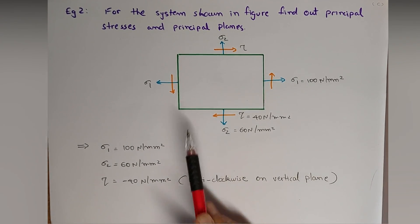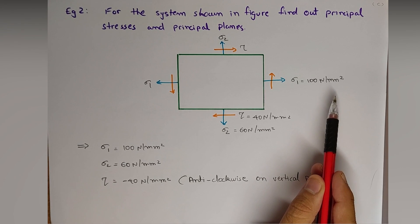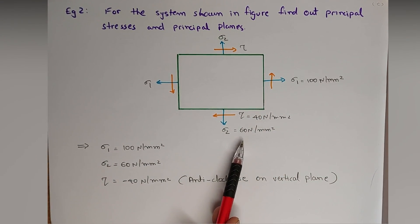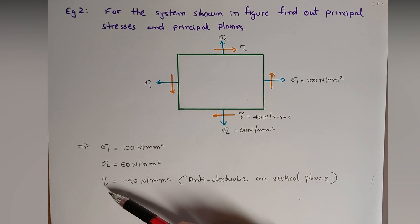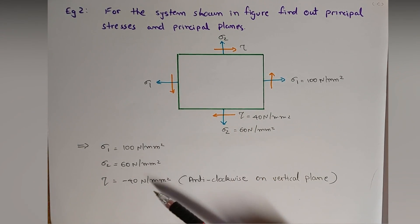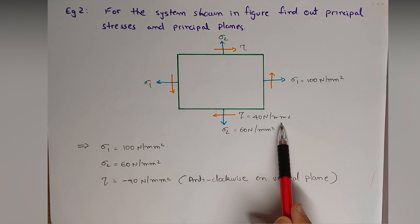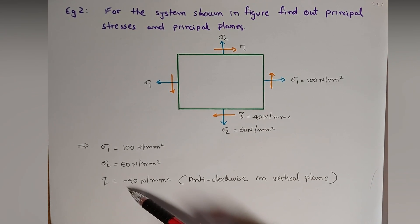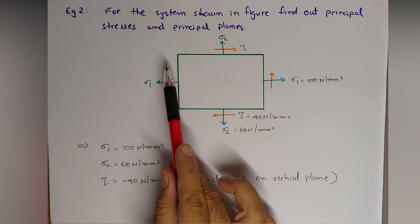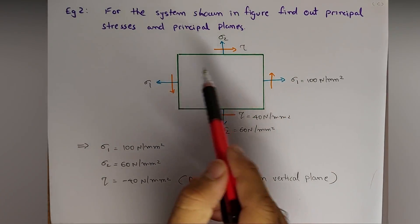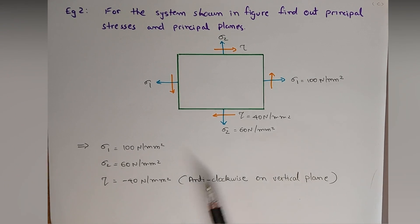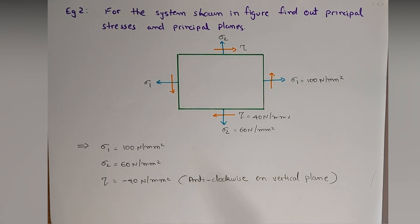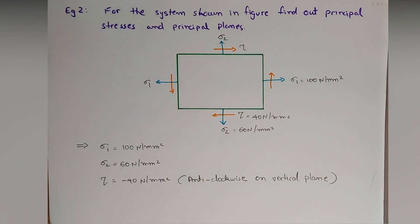Based on this figure, we'll plot the data. Sigma one is 100 Newton per mm square, tensile. Sigma two is also tensile at 60 Newton per mm square, which is positive since its nature is the same as sigma one. Tau (shear stress) is minus 40 Newton per mm square — it is negative because it is acting anti-clockwise on the vertical plane; anti-clockwise is negative and clockwise would be positive.